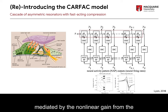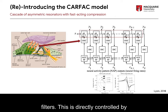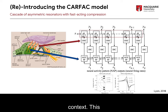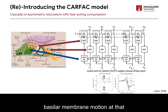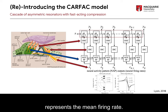The damping is mediated by the non-linear gain from the outer hair cells stage, which is integrated closely to the filters. This is directly controlled by the automatic gain control, representing the efferent fibers to the outer hair cells in the biological context. This automatic gain control is driven by the inner hair cells that respond to the basilar membrane motion at that particular stage or channel, and these also provide the final neuroactivity pattern in each channel, which represents the mean firing rate.